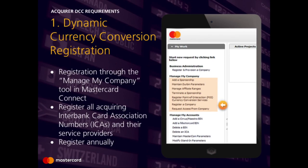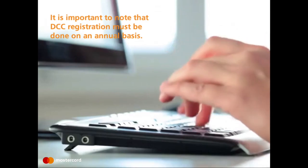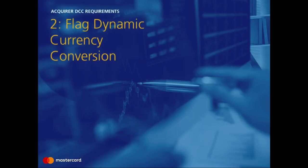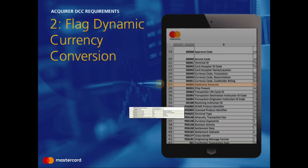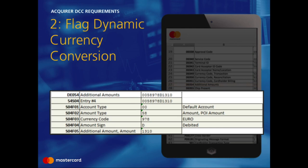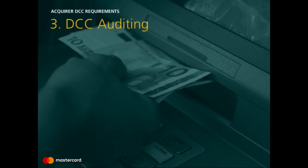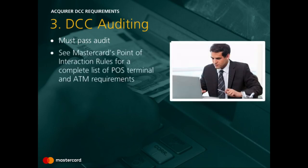During the registration process, the acquirer will be prompted to register any service provider being used to help offer DCC services for the ICAs being registered. It is important to note that registration must be done on an annual basis, as it expires after one year. The second requirement is that all DCC transactions be identified by the acquirer in the transaction through data element 54, a field used for indicating additional amounts within the transaction data. MasterCard's third DCC requirement is that merchants, ATMs, or unattended POS terminals pass audits that are conducted. Audits are used to confirm compliance with DCC rules, such as cardholder choice and displaying the currency conversion rate, and the amounts in both home and local currencies.